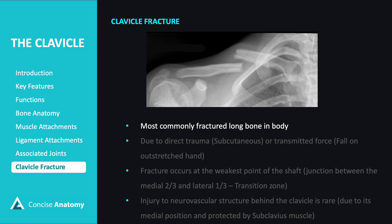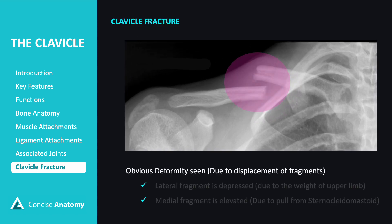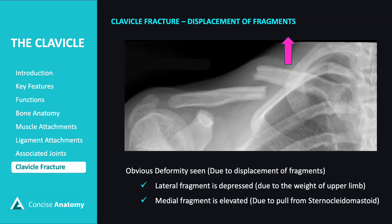The clavicle is the most commonly fractured long bone in the body, typically due to direct trauma or a fall on an outstretched hand. Fractures usually occur at the weakest point — the junction between the medial two-thirds and lateral one-third. Injury to the neurovascular structures behind the clavicle is rare, as they are protected by the subclavius muscle. When there is a clavicle fracture, you'll notice an obvious deformity caused by the displacement of fragments. The lateral fragment is often depressed due to the weight of the upper limb, whereas the medial fragment is elevated because of the pull from the sternocleidomastoid muscle.